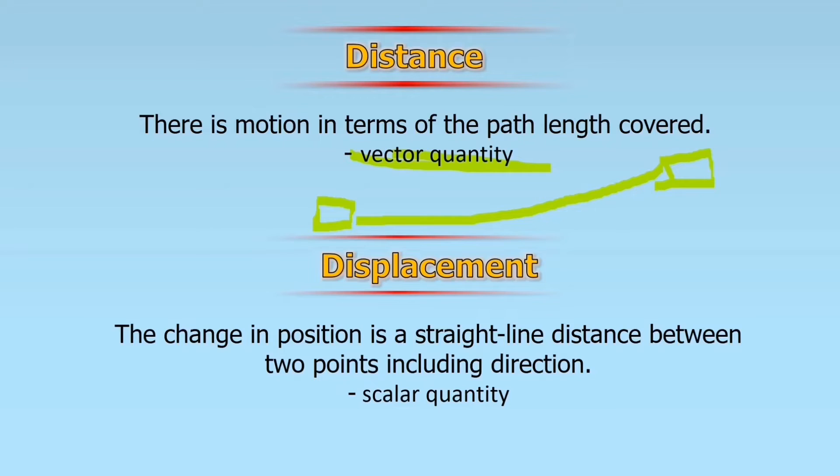However, in displacement, the change in position, in a straight line distance between two points, including the direction. This is scalar quantity. It has no direction. In displacement, you can move and go back. So there is no distance, or the distance is either negative or positive, but there is no direction.